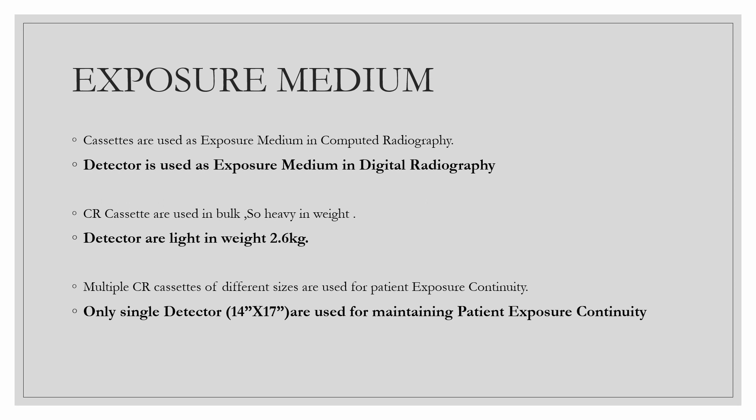In CR, cassettes are used in bulk and are heavy in weight. We use different sizes of cassettes while doing radiography. In DR, the detector is very light in weight — around 2.6 kg only — and there is no need to use different sizes of DR detectors.